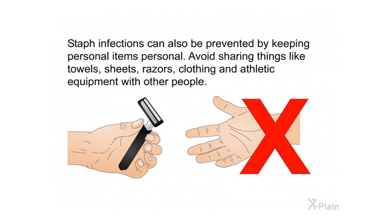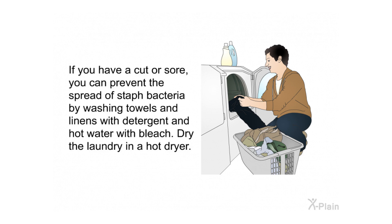Staph infections can also be prevented by keeping personal items personal. Avoid sharing things like towels, sheets, razors, clothing, and athletic equipment with other people. If you have a cut or sore, prevent the spread of staph bacteria by washing towels and linens with detergent and hot water with bleach, and drying the laundry in a hot dryer.